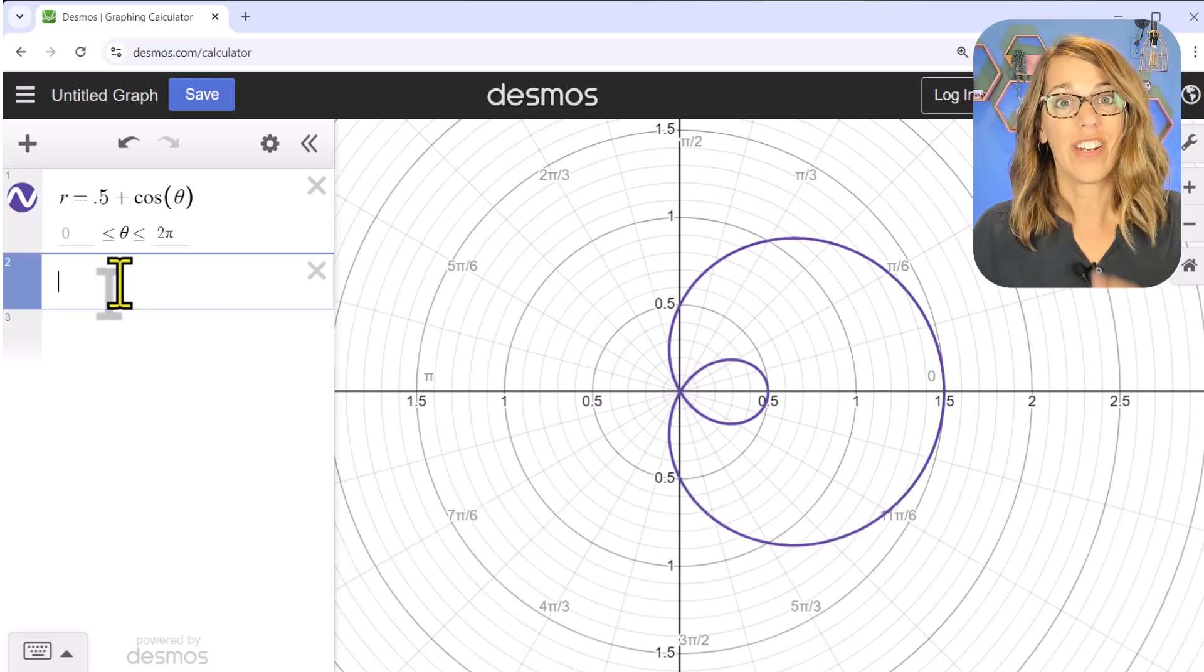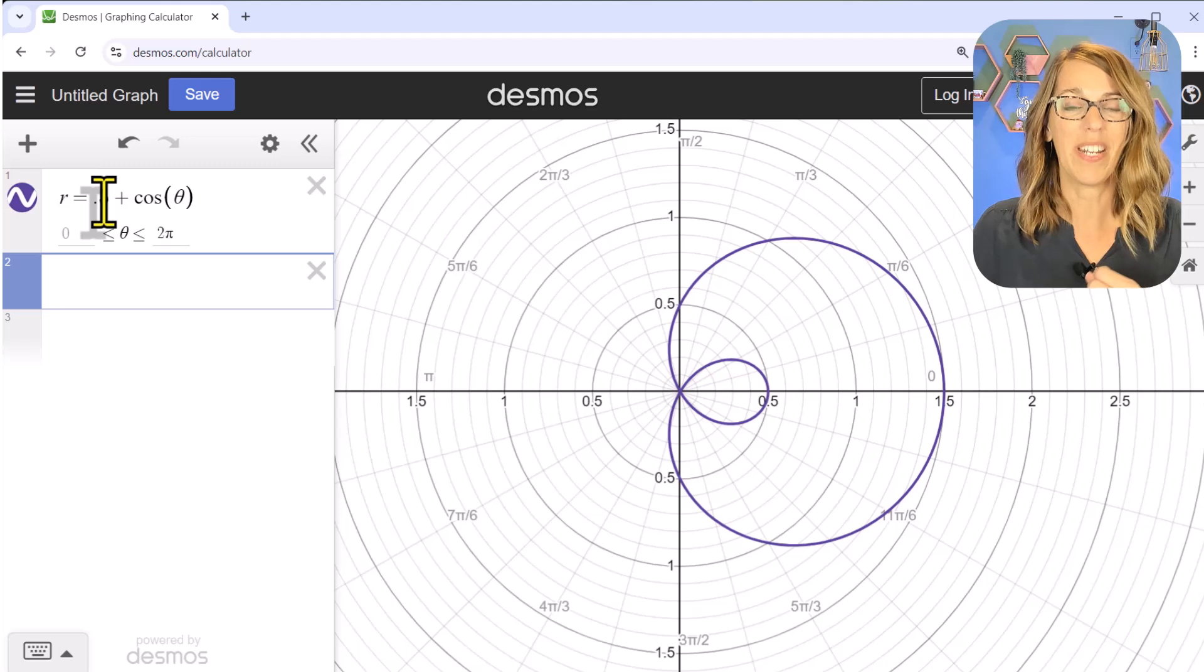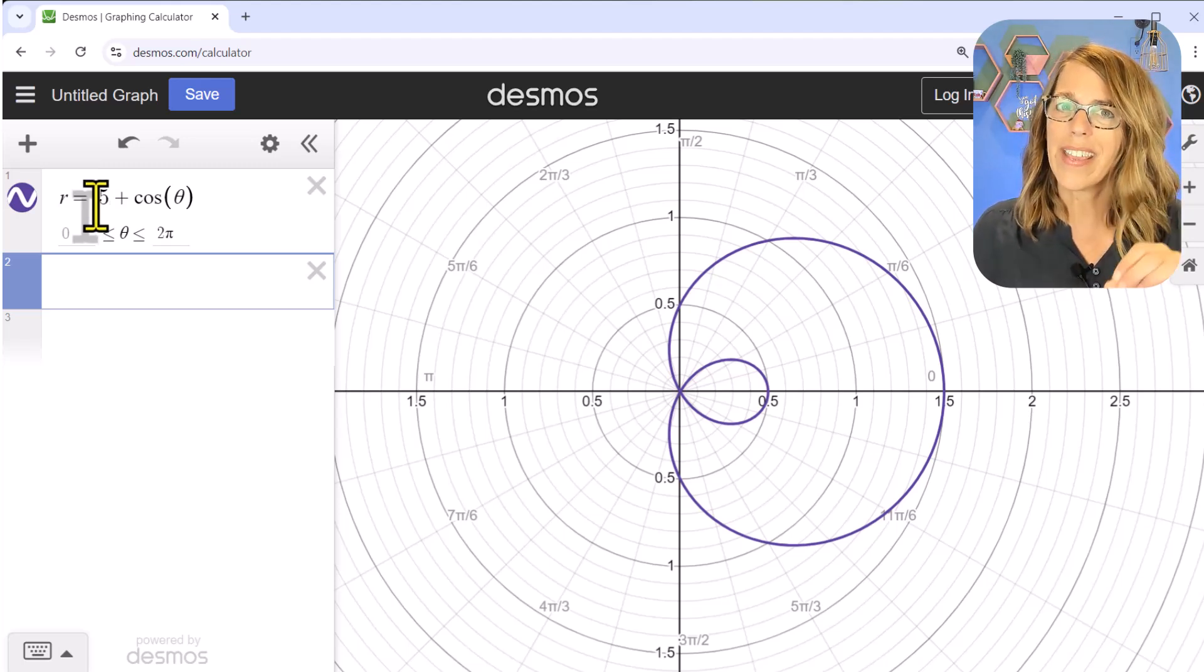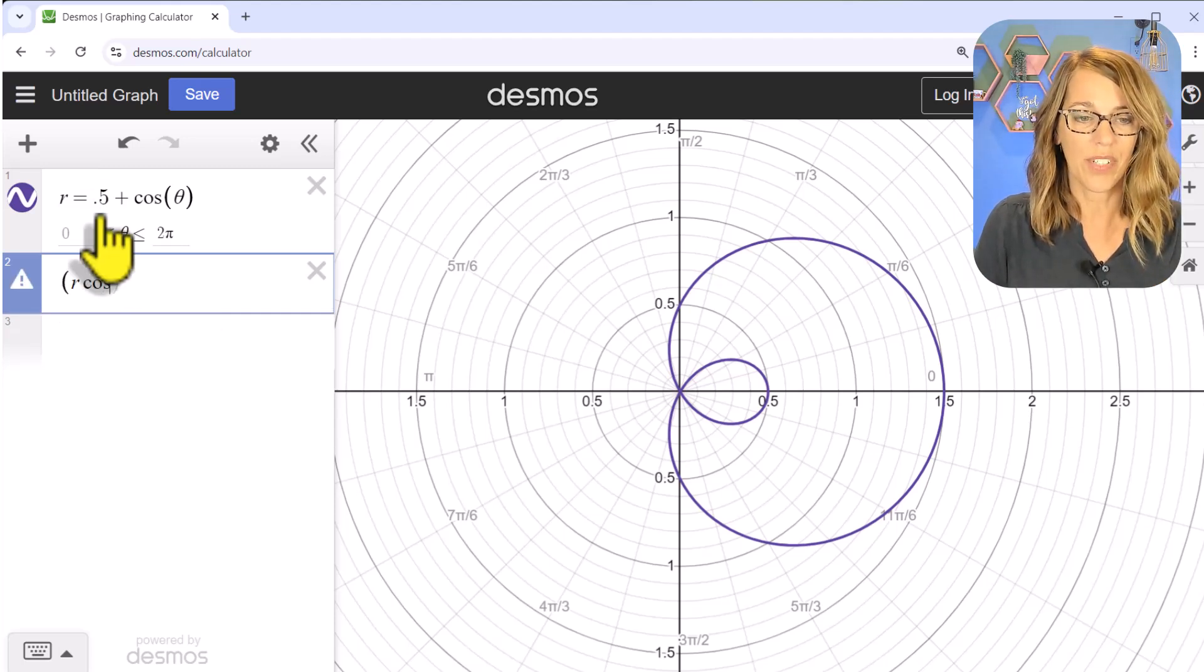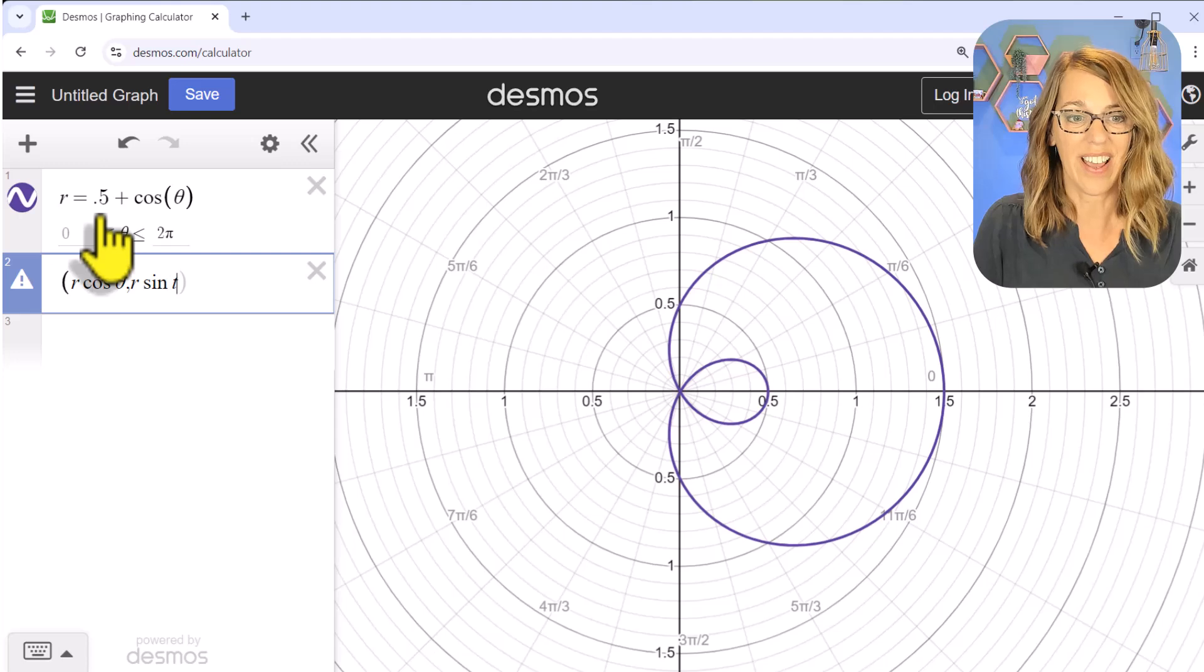Now I want to be able to plot a generic point for this graph, meaning that I'm going to get r from the function. So r is 0.5 plus cos(θ), and I want θ to be any angle. So I know that this is going to be (r*cos(θ), r*sin(θ)).